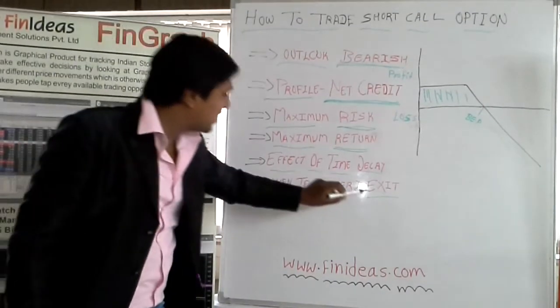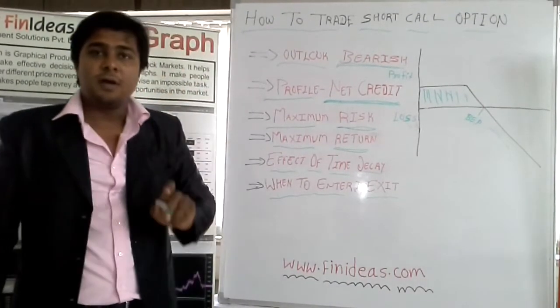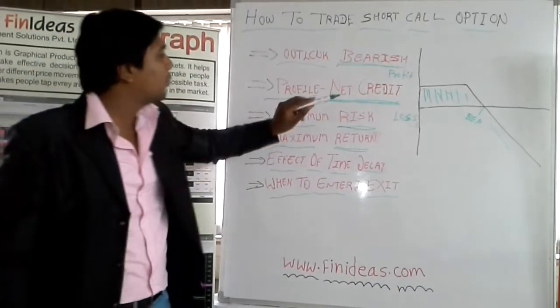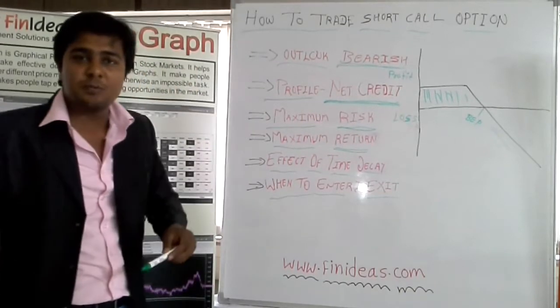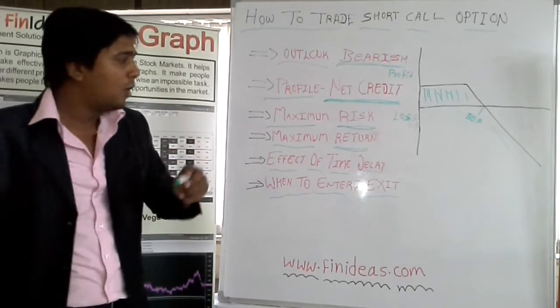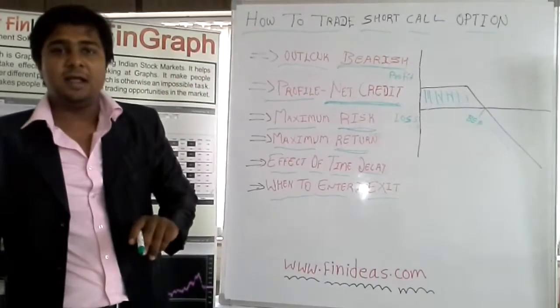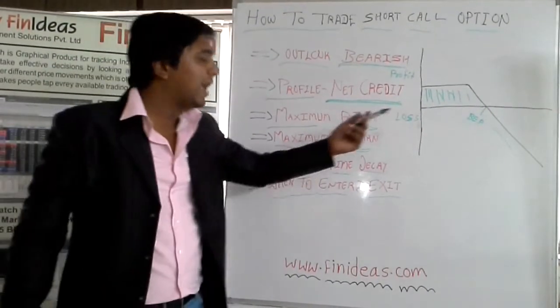And at exit time if you are having a bearish movement in the market and you want to profit, you can book profit when there is a bearish movement and your target is achieved. Or you should put a stop loss on the higher movement side, and if it triggers you should take an exit.